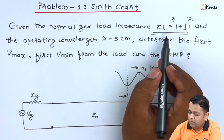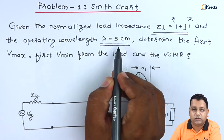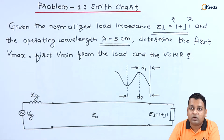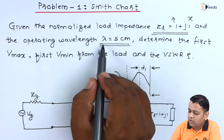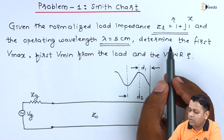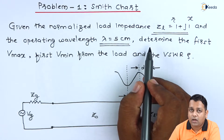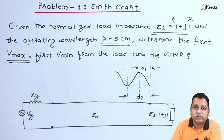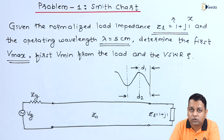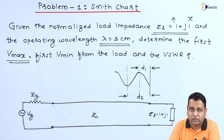After the normalized load impedance, we have the operating wavelength — the wavelength value is 5 centimeters. The Smith chart has a circular scale corresponding to wavelength towards the generator and towards the load, so we can have a difference of 5 centimeters to differentiate between the Vmaxes and Vminimas. The Vmaxes can be found on the right-hand half of the Smith chart, corresponding to the center marked at R equals 1 and imaginary component equal to 0.